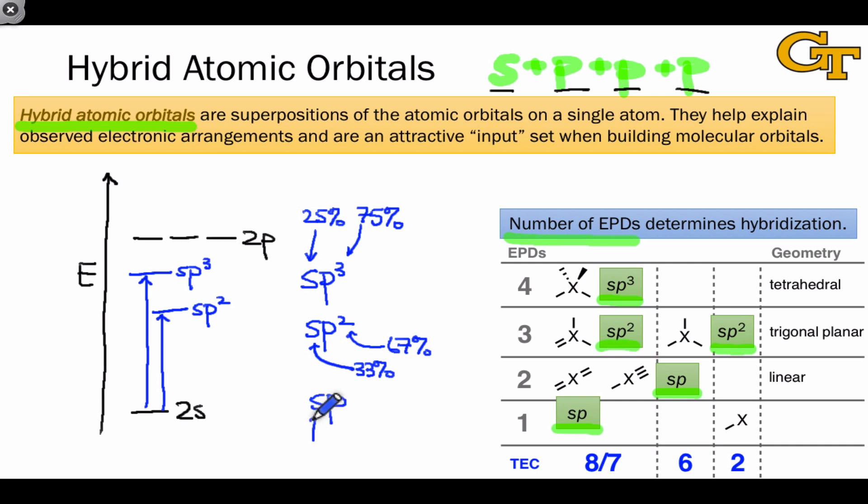And finally, because the sp hybrid is 50% s and 50% p, the sp hybrid orbital is halfway between the energies of the 2s and 2p orbitals.